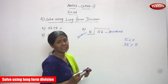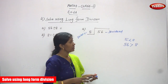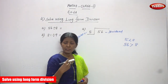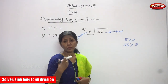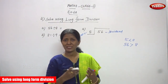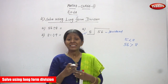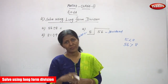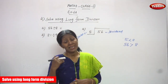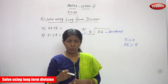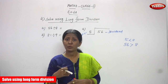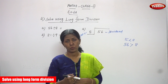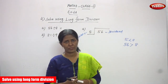Now, you must say the 8th table up to 56. You must write the nearest value of the dividend. That means that number should always be less than the dividend, or almost equal to the dividend.